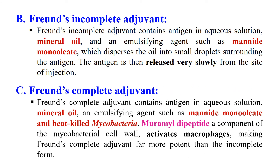The second is Freund's Complete Adjuvant. It contains all the components of Freund's Incomplete Adjuvant — mineral oil and mannide monooleate — but in addition it contains a component of the bacterium Mycobacterium, which is muramyl dipeptide. Muramyl dipeptide is a component of the cell wall of Mycobacterium and it activates macrophages inside the body. Activation of macrophages causes the immune response to also get activated and become more rapid. Due to this macrophage activation and slow release of the antigen, the overall immune response is enhanced, increasing the immunogenicity of the weak antigen.